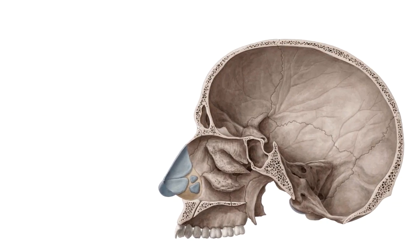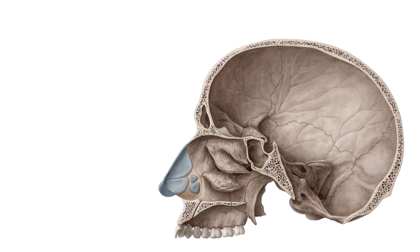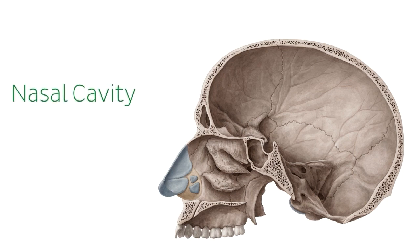We're looking at a mid-sagittal section of the skull where we can see the nasal cavity as well as the bones of the skull — the frontal, parietal, temporal and occipital bones. The nasal cavities are two paired cavities found on either side of the nasal septum, beginning at the nares or the nostrils and ending at the pharynx.